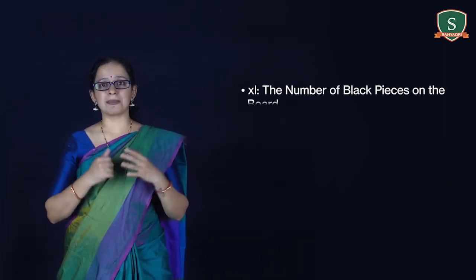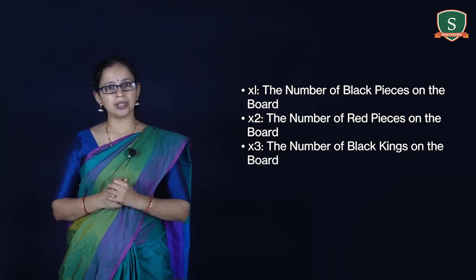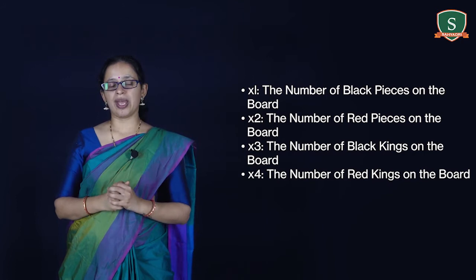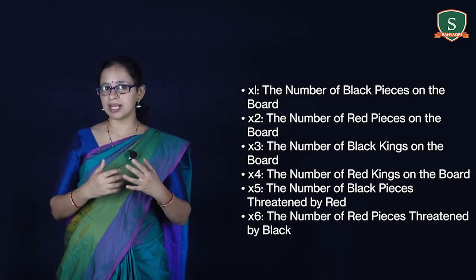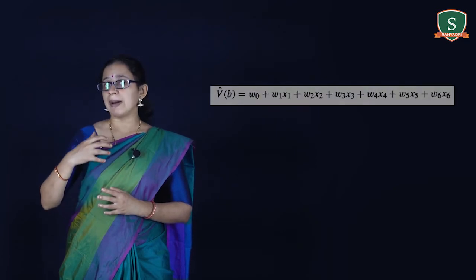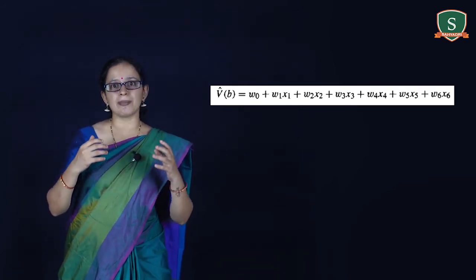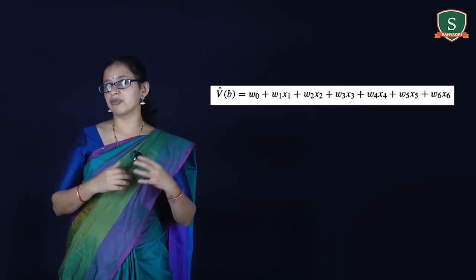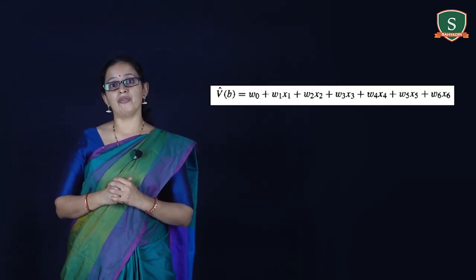X1 is the number of black pieces on the board. X2 is the number of red pieces on the board. X3 is the number of black kings on the board. X4 is the number of red kings on the board. X5 is the number of black pieces threatened by red. X6 is the number of red pieces threatened by black. The learning program represents V̂ as a linear function of these features, where W0 through W6 are numerical coefficients or weights chosen by the learning algorithm. The weights W1 through W6 determine the relative importance of board features, and W0 provides an additive constant.